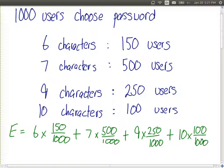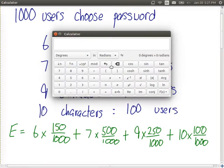9 times 250 over 1,000 plus 10 times 100 divided by 1,000 or 0.1. And with a calculator, we can calculate that. 6 times 0.15 plus 7 times 0.5 plus 9 times 0.25 plus 10 times 0.1 equals 7.65.